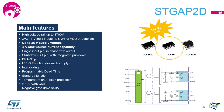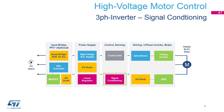STGAP2D is our half bridge driver featuring an isolation voltage of up to 1.7 kV, 4 A sink and source capability, and easy driving thanks to a single input pin with the output signal in phase with the input. The programmable dead time and the ability for negative gate drive provide increased commutation robustness. As with all STGAP2 devices, 100 V/ns CMTI is featured.